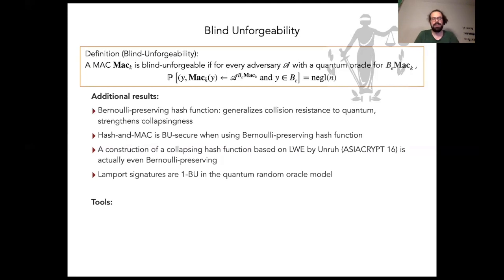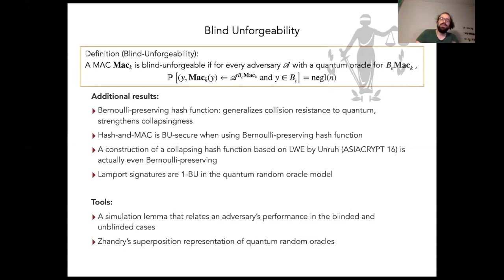To prove these results, we use mainly two tools. First of all, we have a simulation lemma that shows that an attacker doesn't behave very differently if provided with a blinded oracle with small blinding parameter compared to an unblinded oracle. As a second tool, we use the superposition representation of a random oracle by Zhandry. This we use extensively.